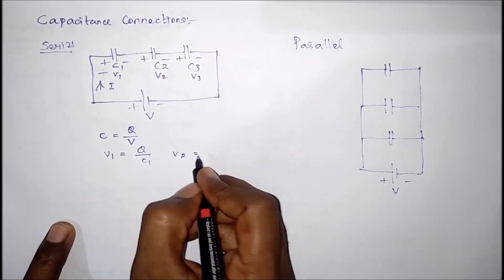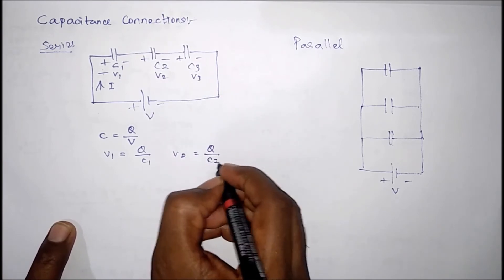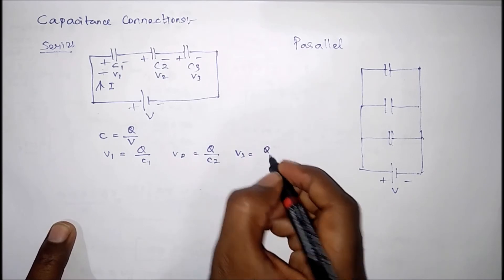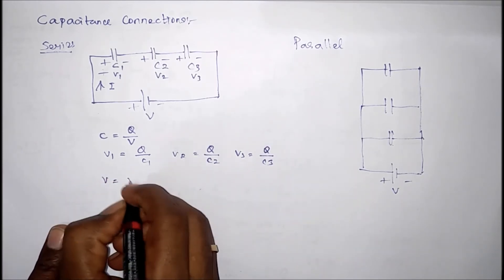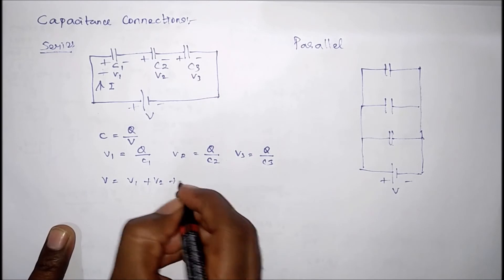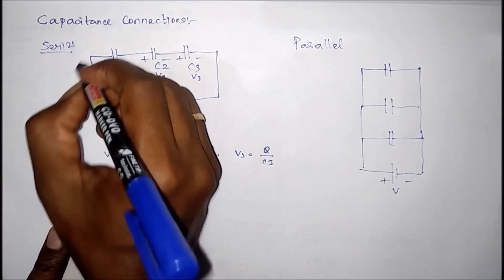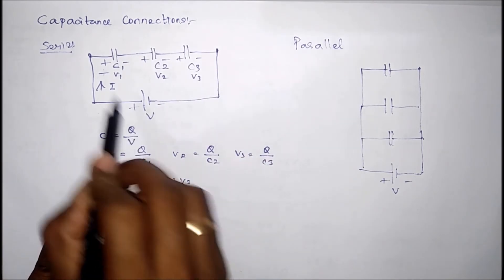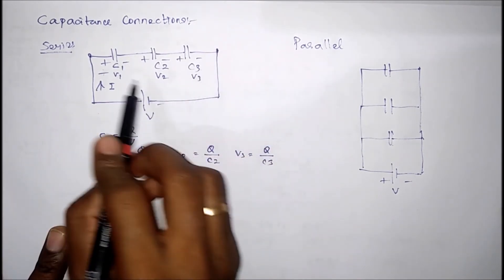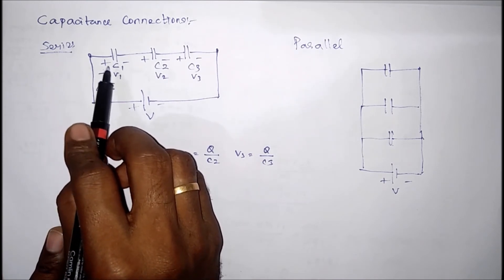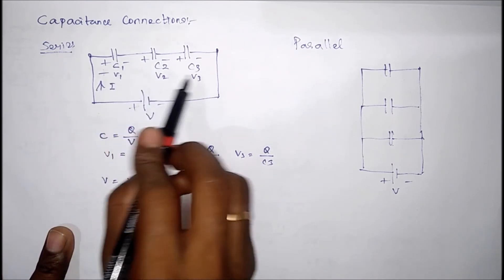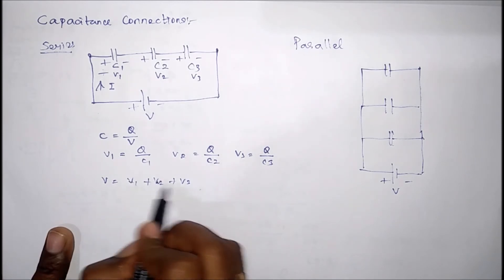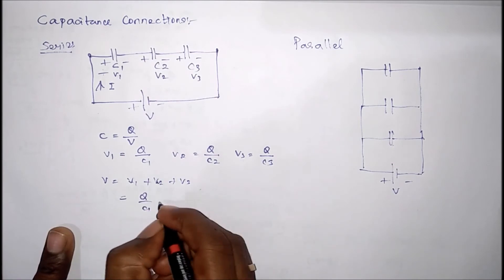The voltage across capacitor C2 is V2 equal to charge Q divided by C2, and voltage across capacitor C3 is V3 equal to Q divided by C3. We know that V equals V1 plus V2 plus V3, because this is the applied voltage. The applied voltage V equals the sum of voltages V1, V2, and V3 — it is split into three voltages. Substituting, V equals Q/C1 plus Q/C2 plus Q/C3.